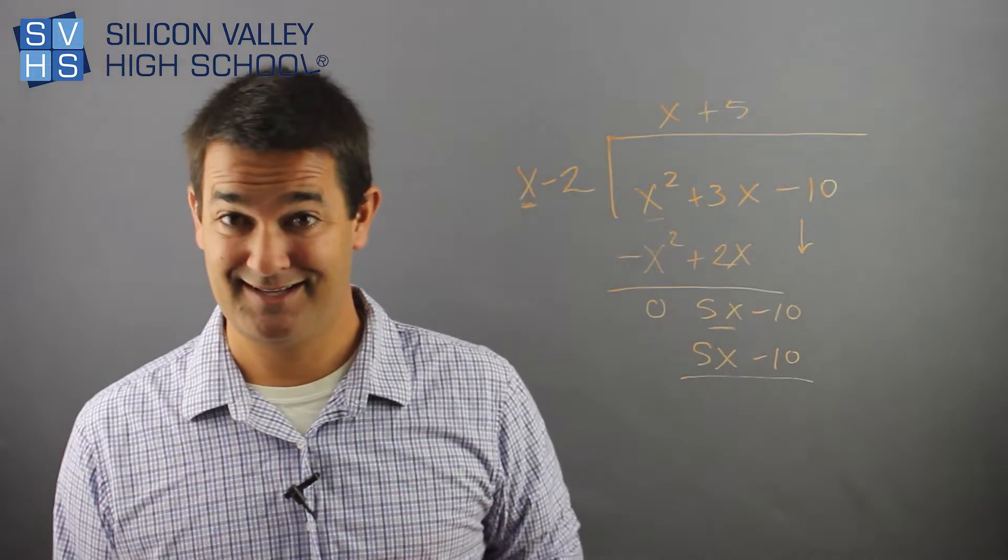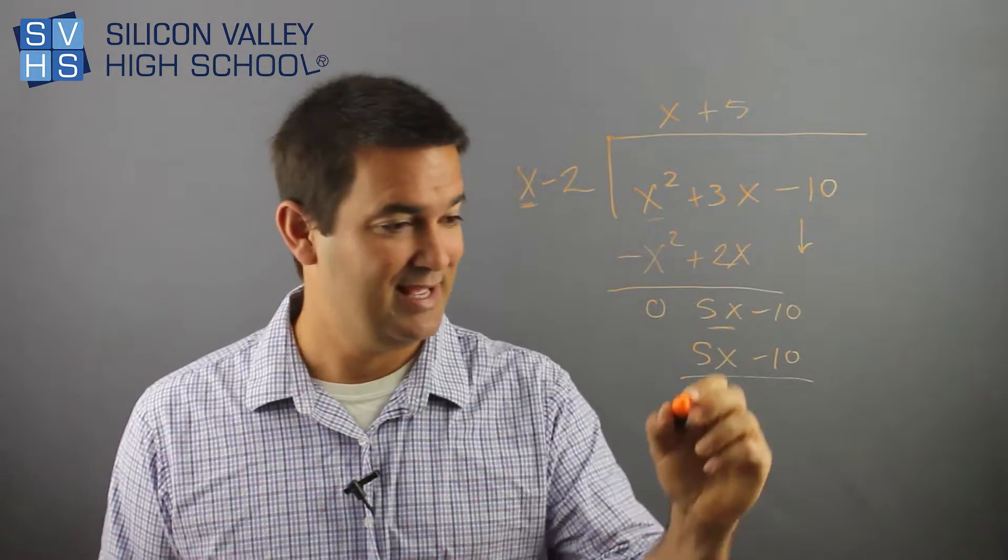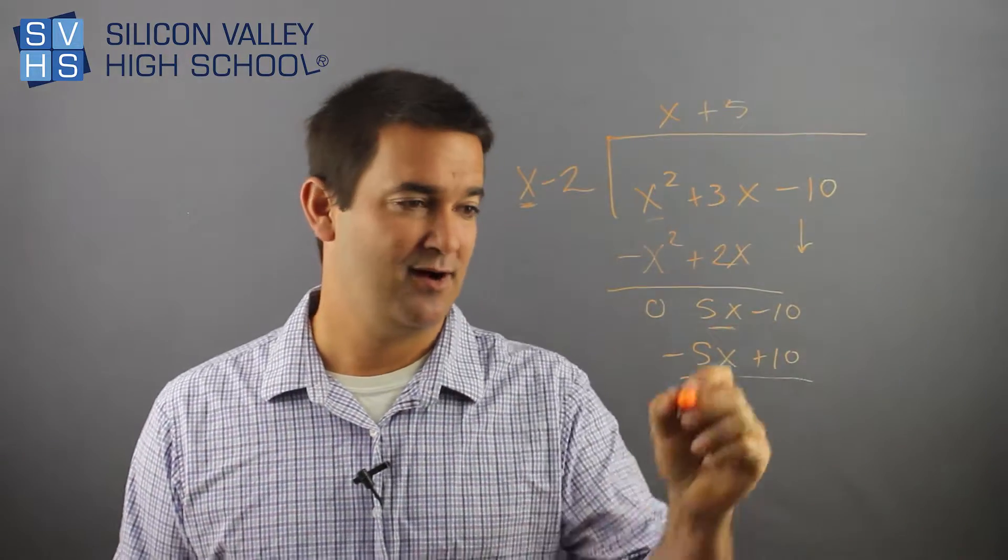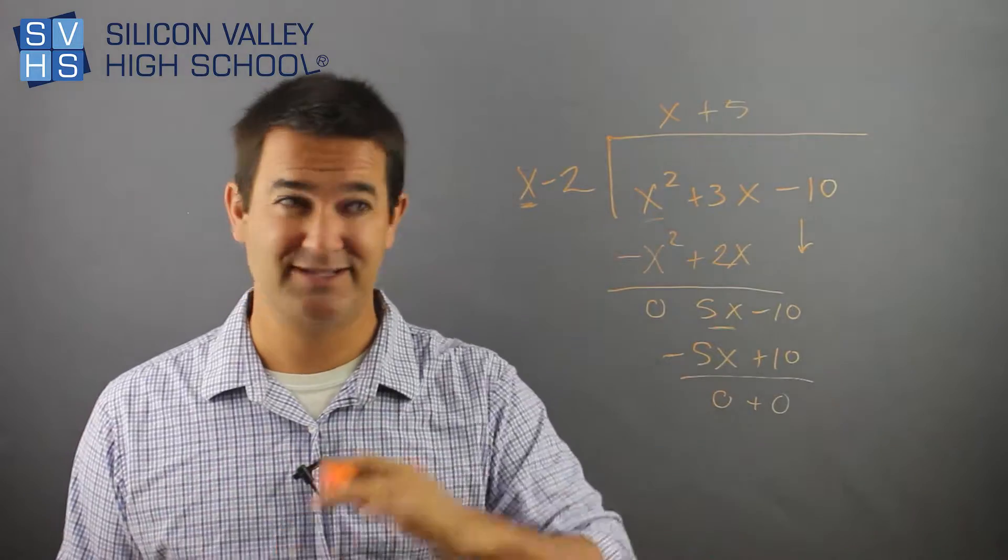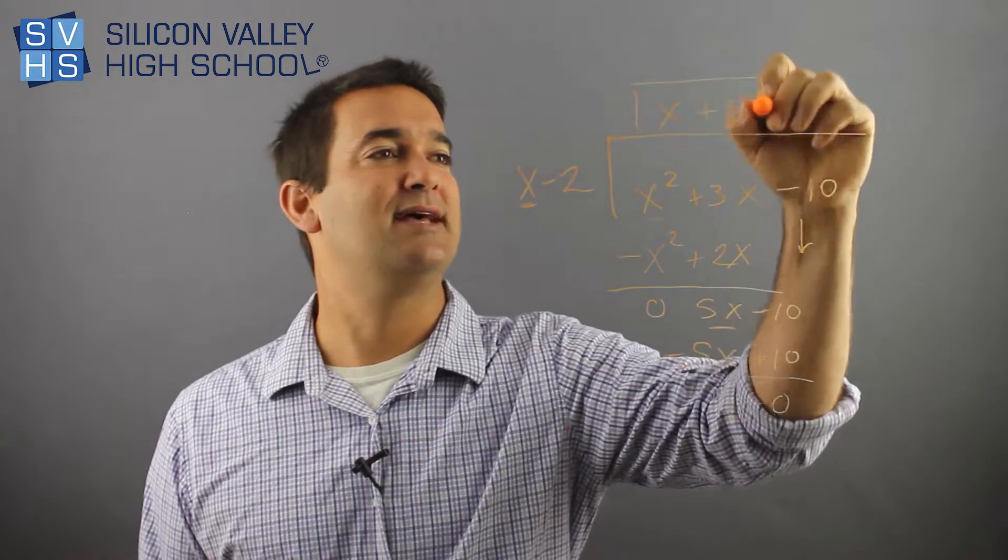Now, we have 5x minus 10. Now, here's the big moment. Here's the moment we've all been waiting for. Change both signs. Oh, gone. Gone. Remainder is 0. There is no remainder. So, the answer is x plus 5.